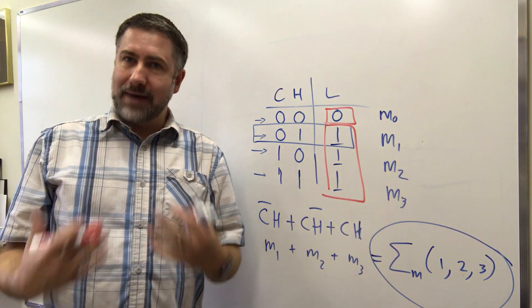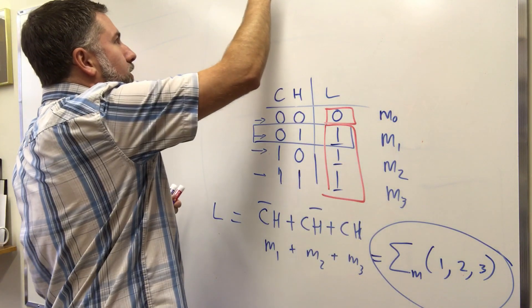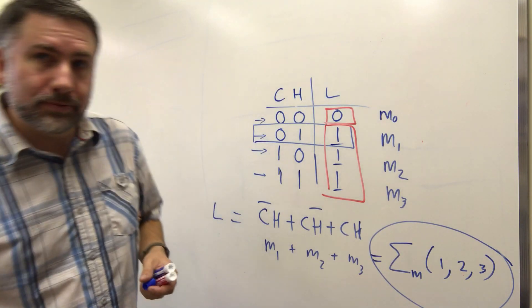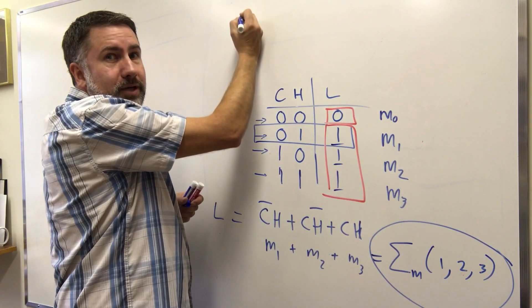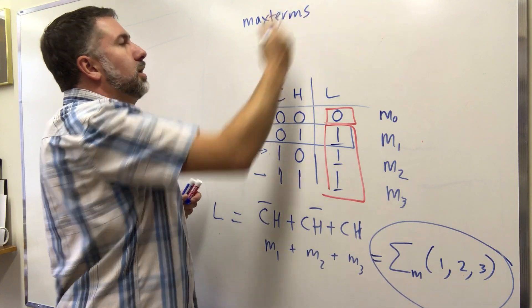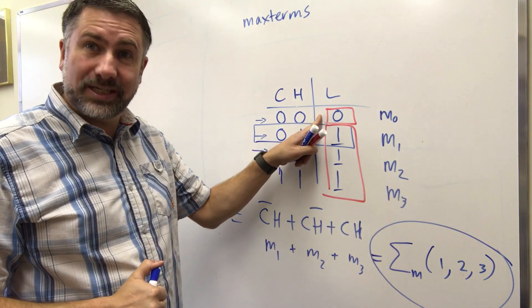These are the maxterms. Now this is the opposite kind of a thing. Put this up here, maxterms. And these correspond to the list. Whoops! You can't see that. Where can I put it so I can see it? Right about here. And the maxterms correspond to the places in the circuit where the output is 0.